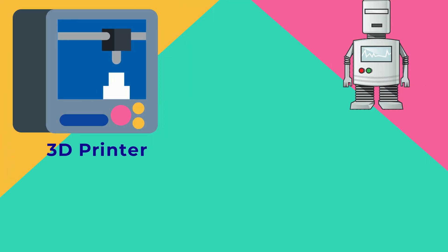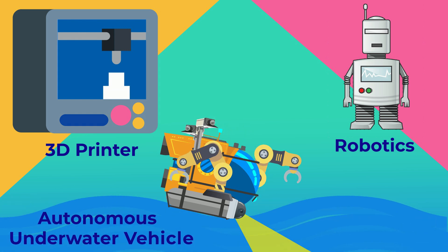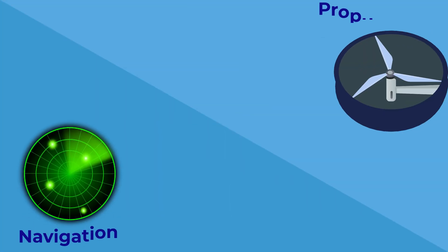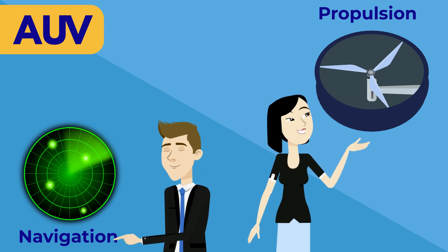For example, this could be a 3D printer, robotics design, or even an autonomous underwater vehicle, or AUV for short. Let's take the navigation and propulsion systems on an AUV to get some good insight on how a mechatronics design really works.